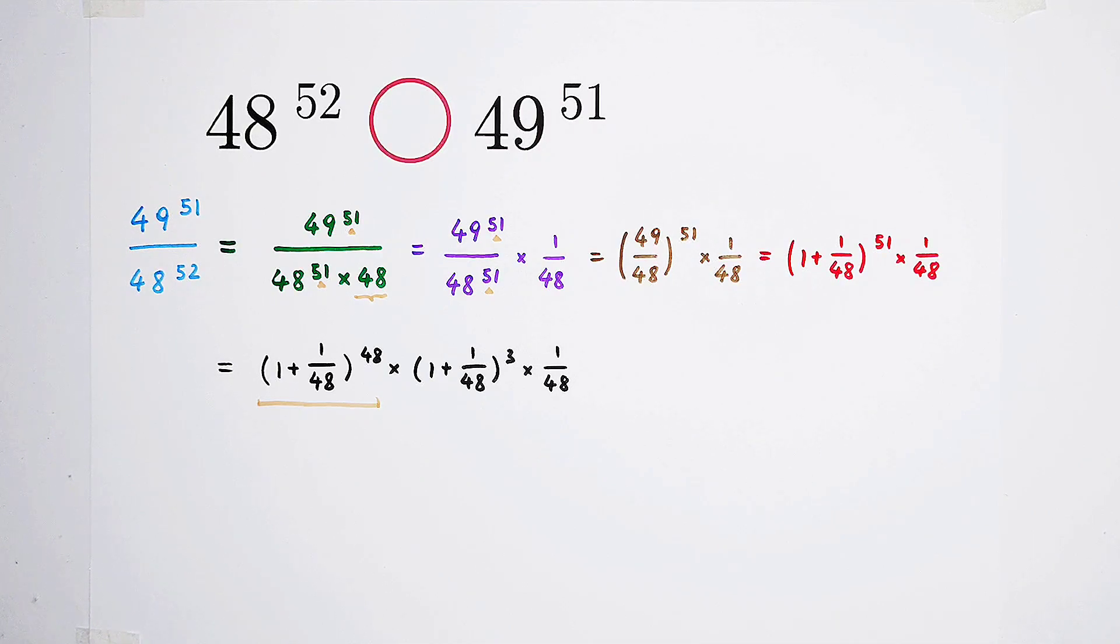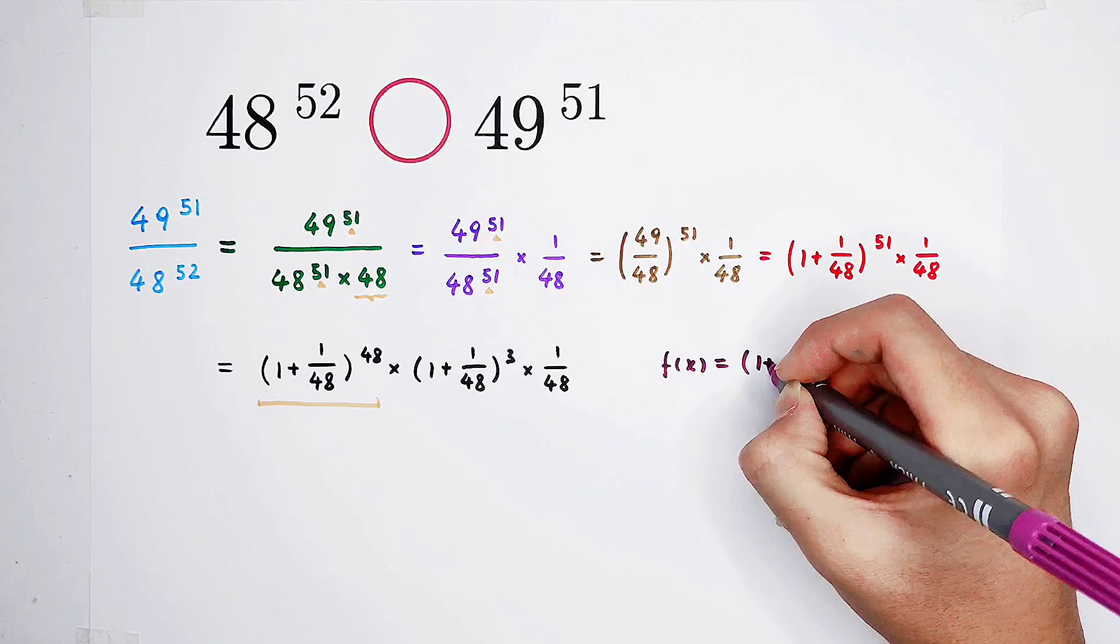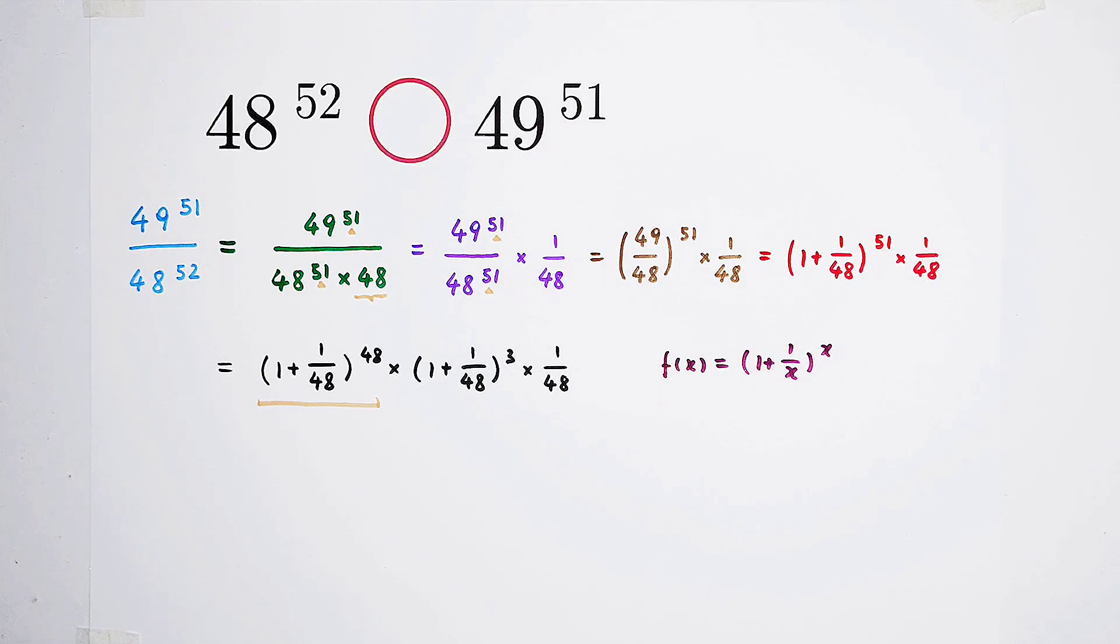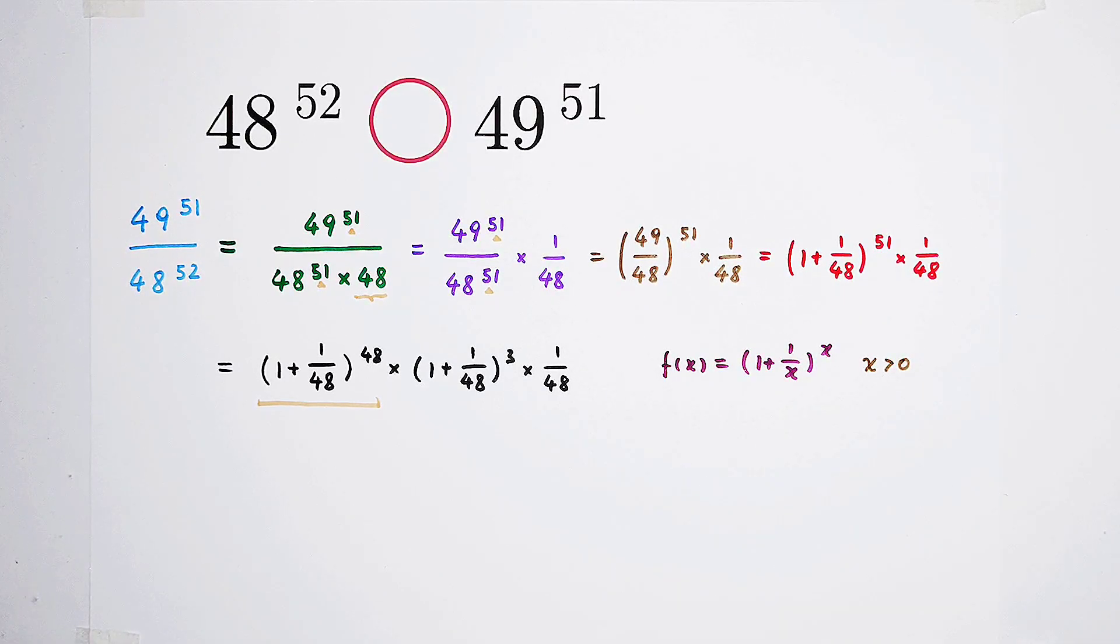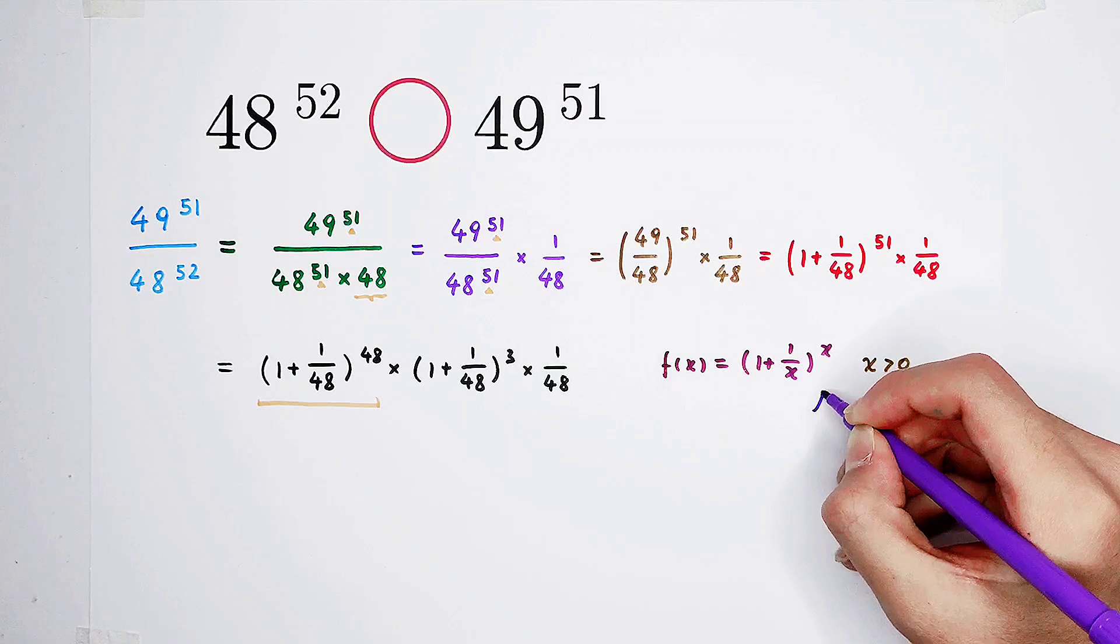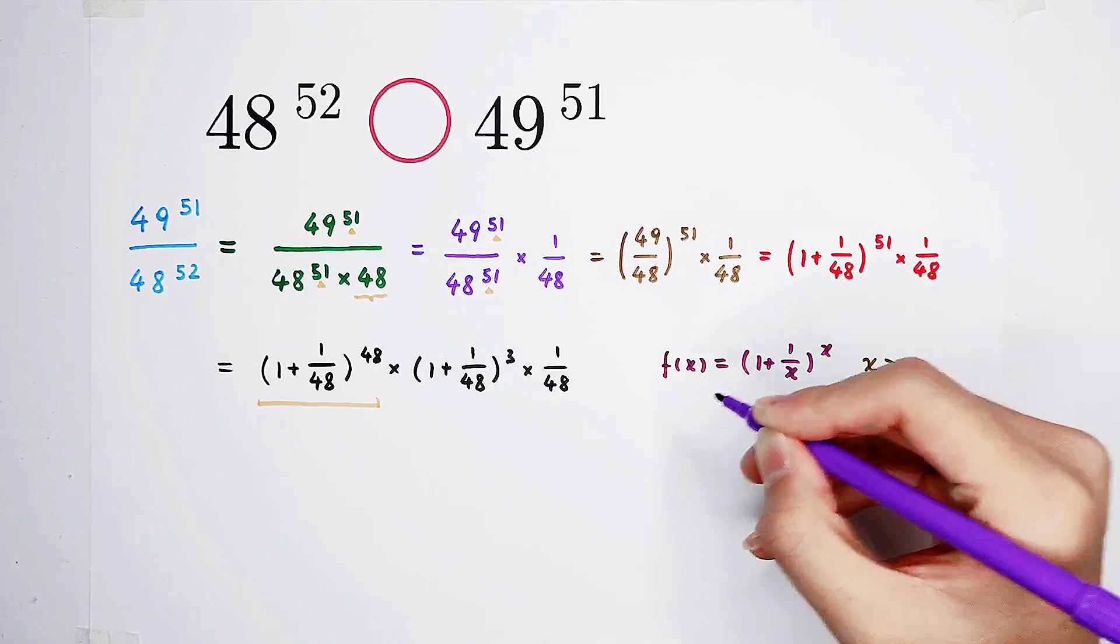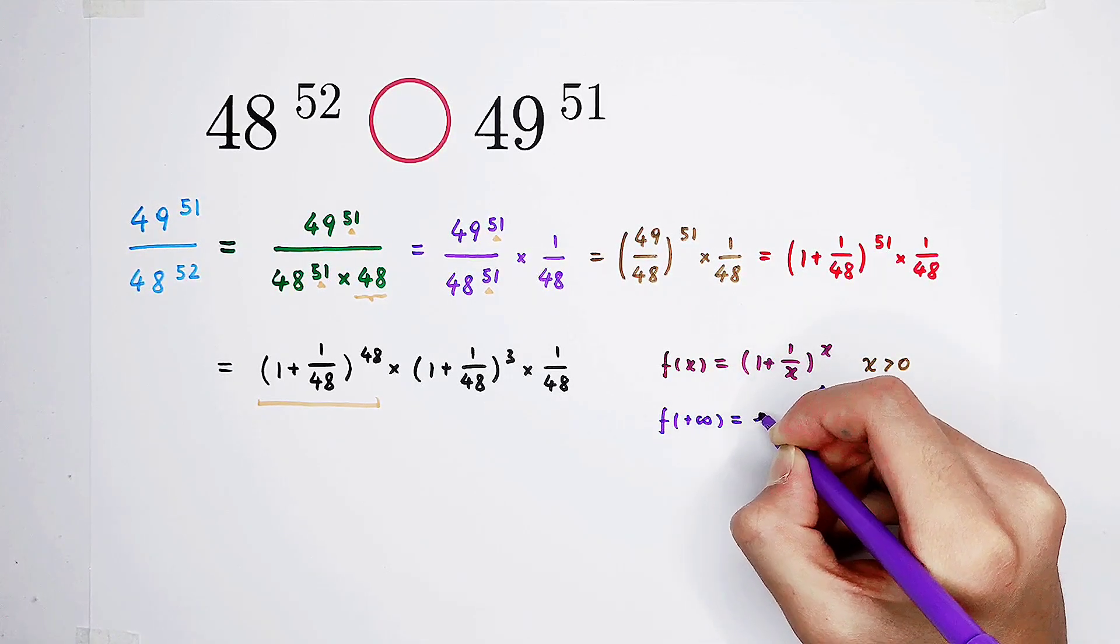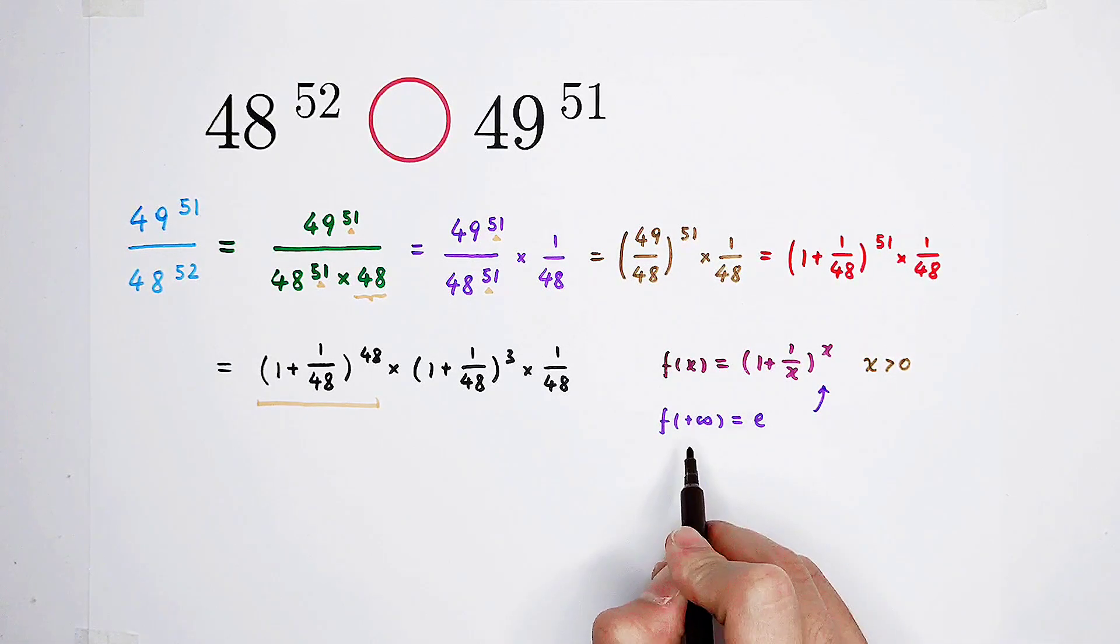Very good. Now, I'd like to introduce a function to you. This function. f of x is equal to 1 plus 1 over x, all to the power of x. Of course, x is greater than 0. This function, f of x, it is increasing. It is an increasing function. And f of positive infinity is e. And the value of the function will be e if x is equal to the positive infinity.